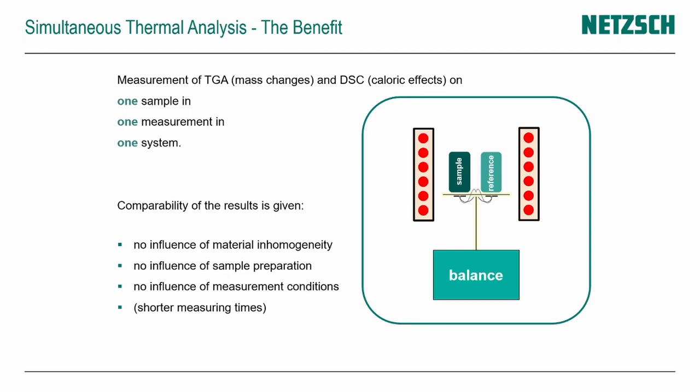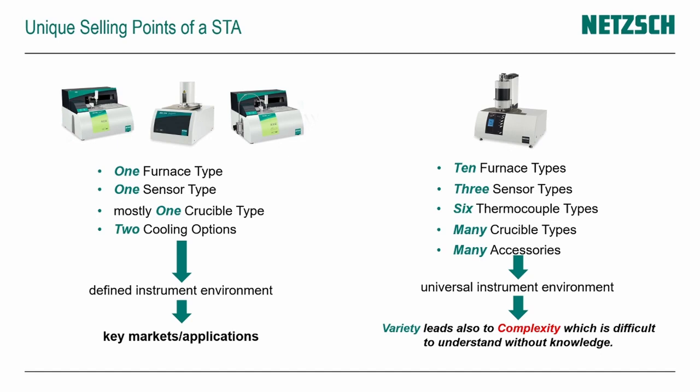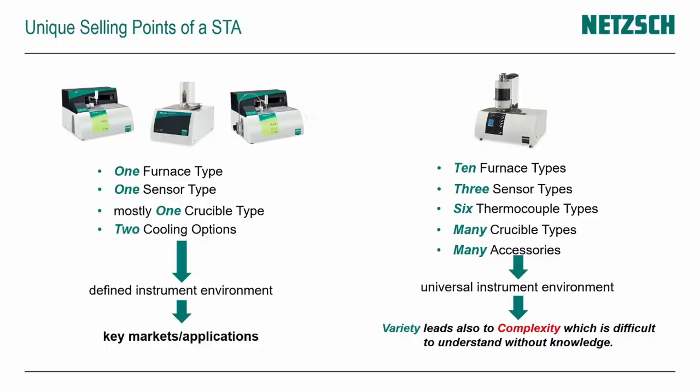Let's dive deeper into the comparison of dedicated methods versus combined methods. In our portfolio, the dedicated systems are quite defined — one furnace option, one sensor option, typically one type of crucible: alumina crucibles for TGA or aluminum crucibles for DSC analyzers. There is some range of choice for cooling options. Nevertheless, the dedicated systems provide a defined instrument environment and are designed for special key markets, especially the low temperature range for polymer or pharmaceutical analysis fields.